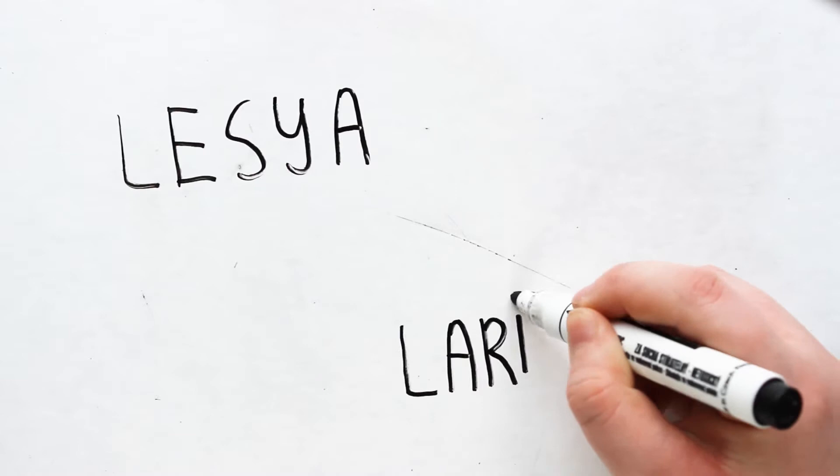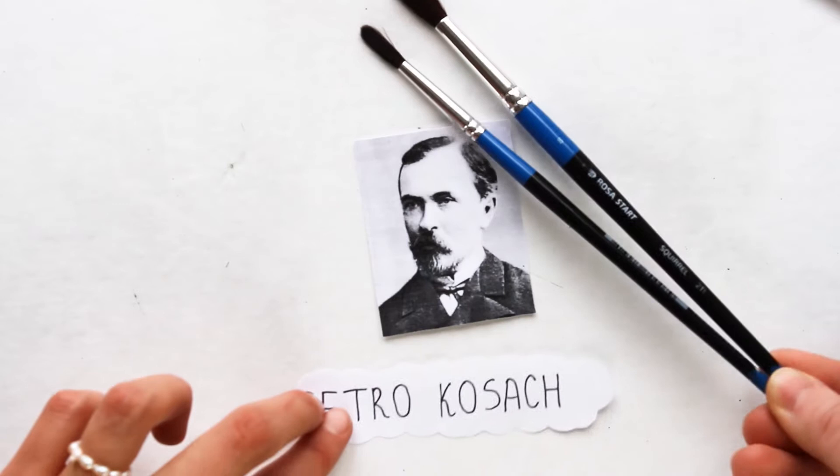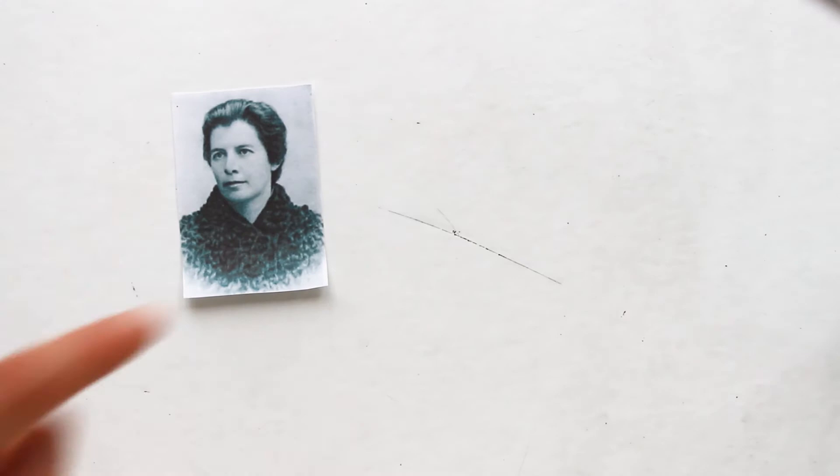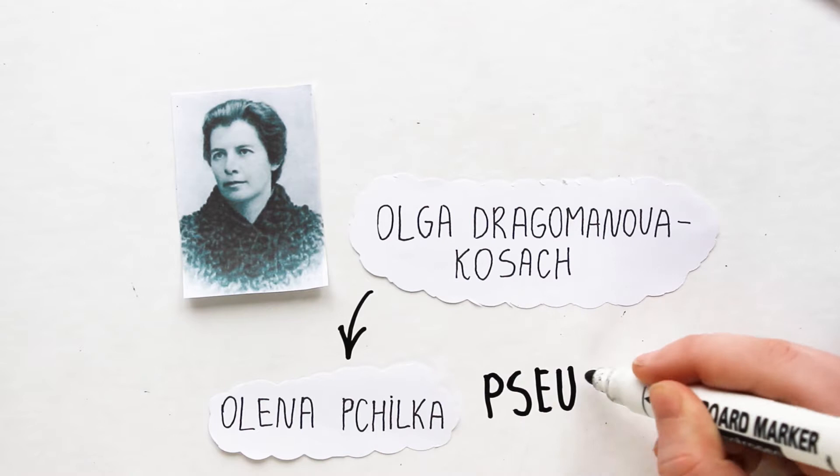The real name of the famous writer is Larissa Kosich. The whole family was incredibly creative. Her father, Petro Kosich, was a connoisseur of painting and art in general. Her mother, the writer Olga Dragomanova-Kosich, worked under the pseudonym Olena Pchilka.